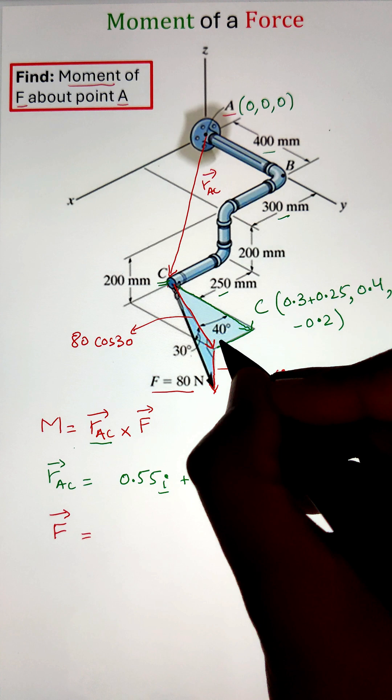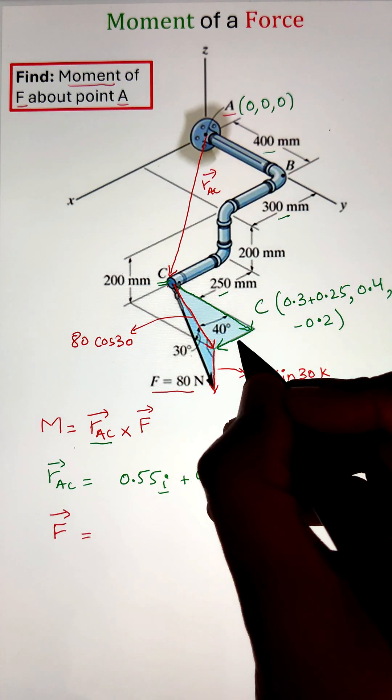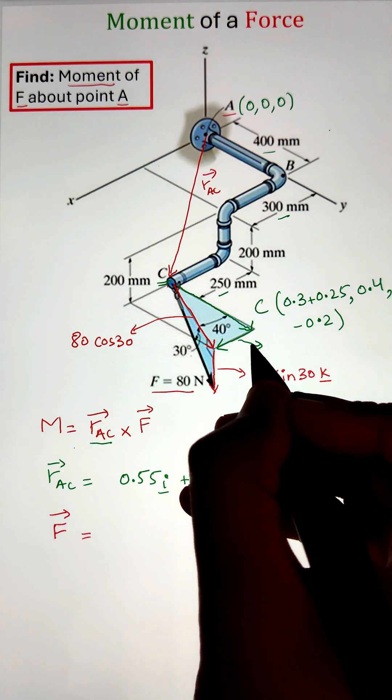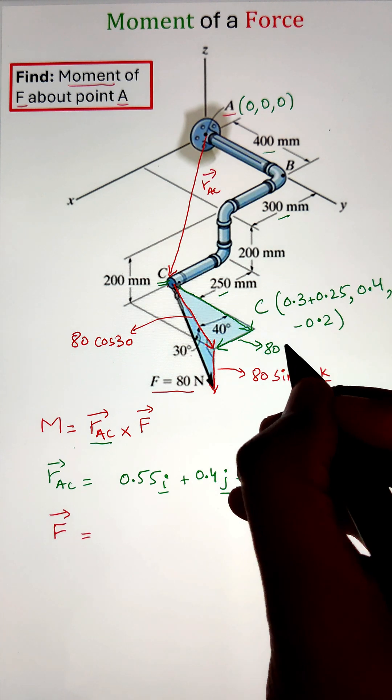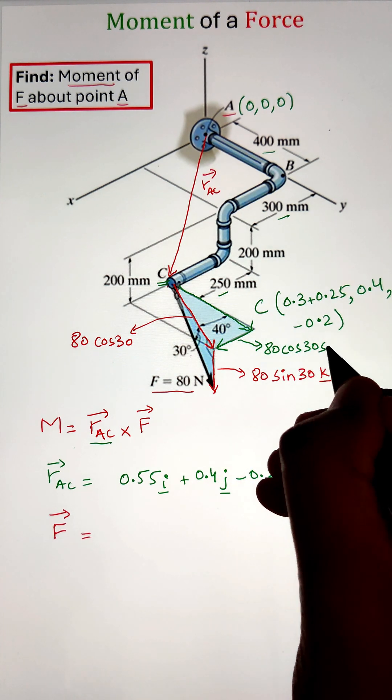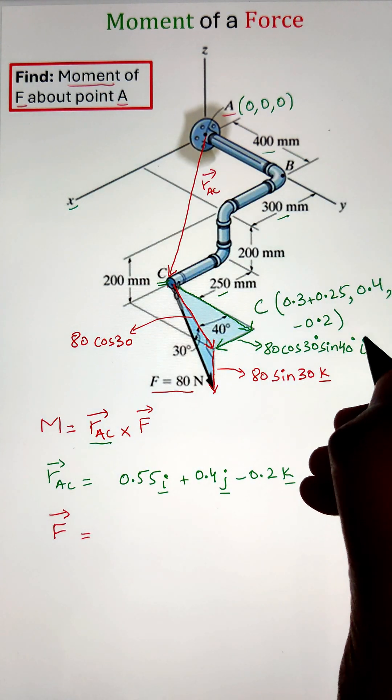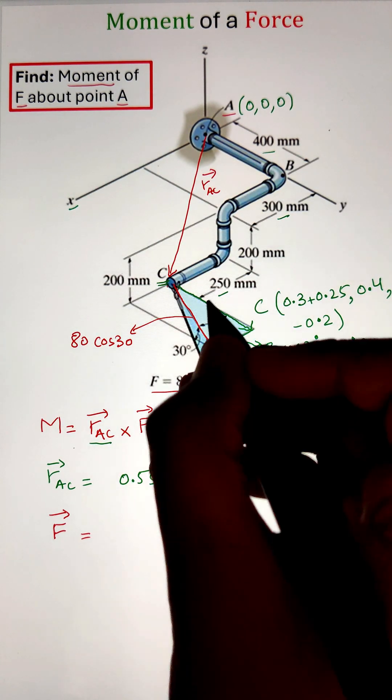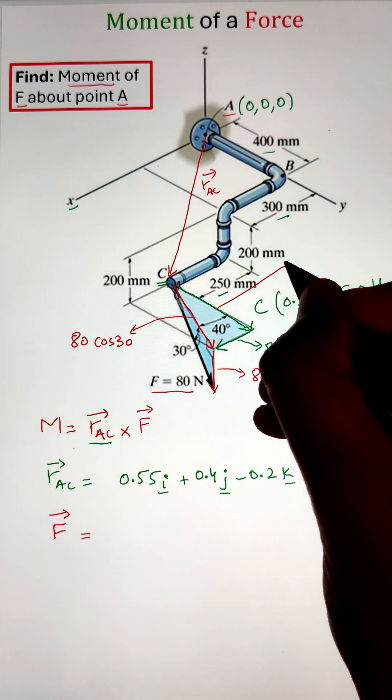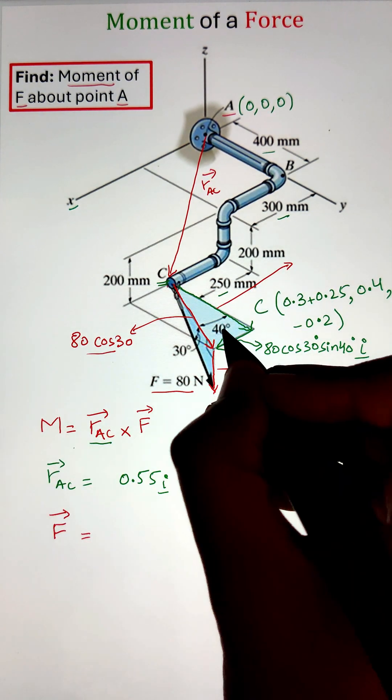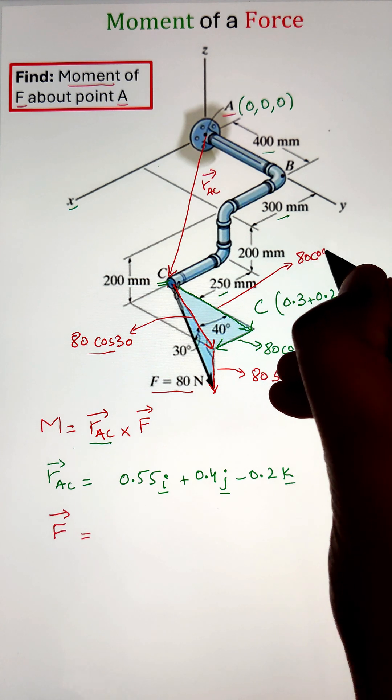Now, this component in the x, y plane needs to be further resolved using the second right angle triangle of 40 degrees. Taking the cosine of 40 degrees will project it along the y axis as 40 degrees is measured from the line parallel to the y axis and the sine function will project it along the axis parallel to x.